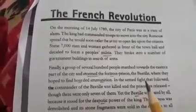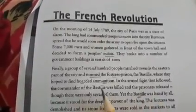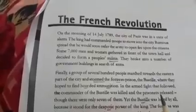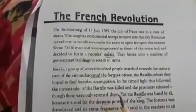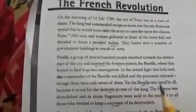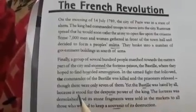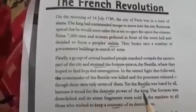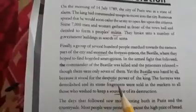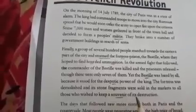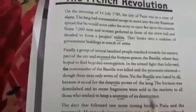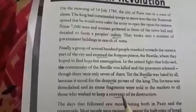They stormed the Bastille, where they hoped to find hoarded ammunition — hoarded means stored, and ammunition means weapons. In the fight that followed, the commander of Bastille was killed and the prisoners were released, though there were only seven of them. Yet the Bastille was hated by all because it stood for the despotic power of the king. The fortress was demolished and its stone fragments were sold in the market to all those who wished to keep a souvenir of its destruction. Despotic means unlimited power, and souvenir means a memory.